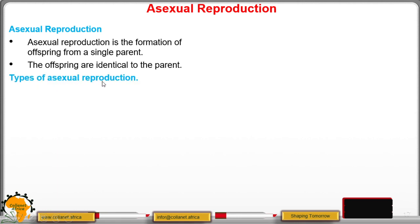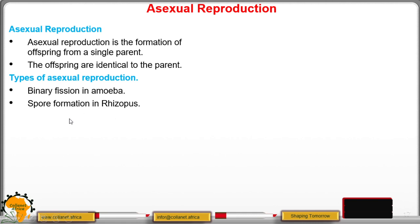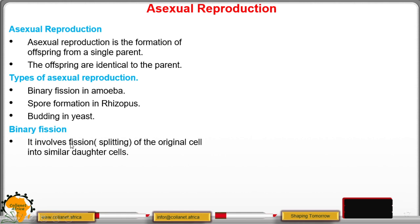There are several types of asexual reproduction. We have binary fission in amoeba, spore formation in Rhizopus, and budding in yeast, among other types. Beginning with binary fission in amoeba: 'bi' means two, and 'fission' means splitting or division, so two divisions are involved. This involves splitting of the original cell into similar cells, which are the daughter cells.